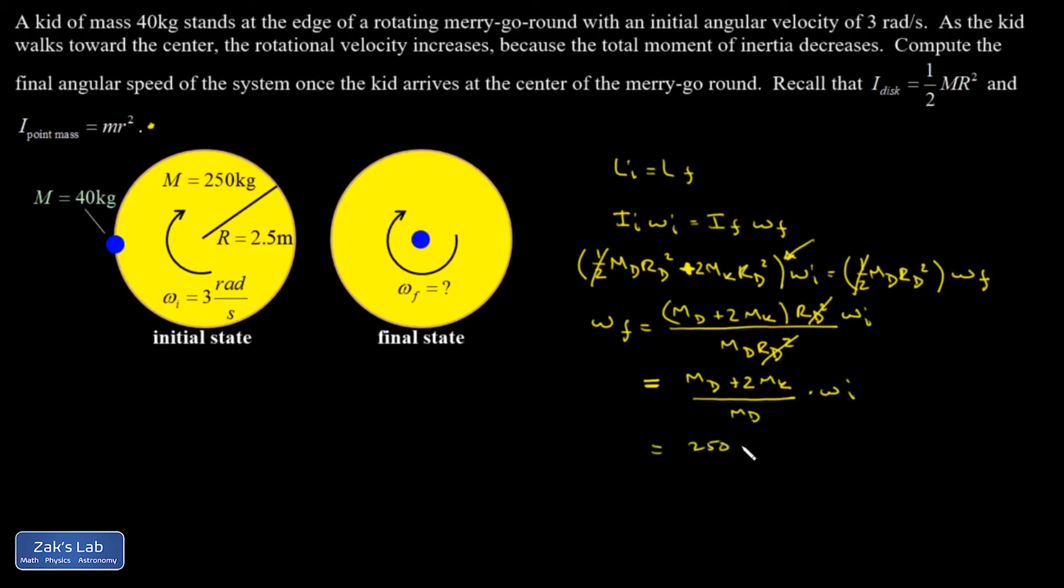That gives me 250 plus twice 40 divided by 250 times three radians per second. And when I run the numbers, I get 3.96 radians per second.